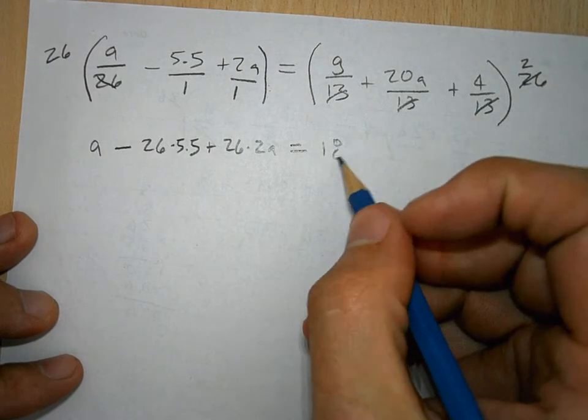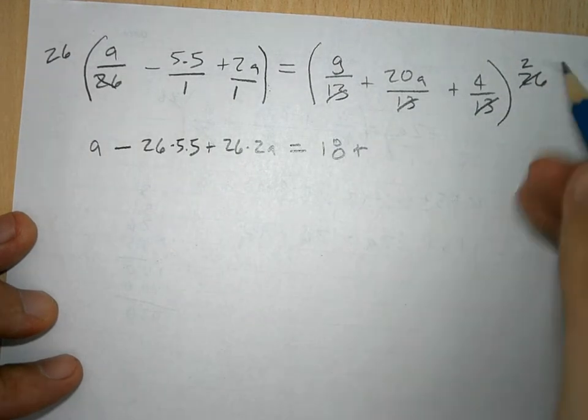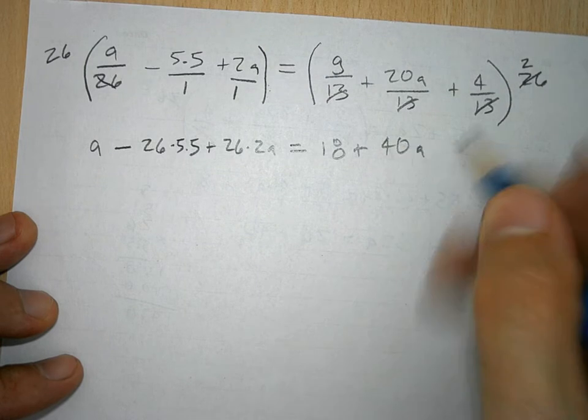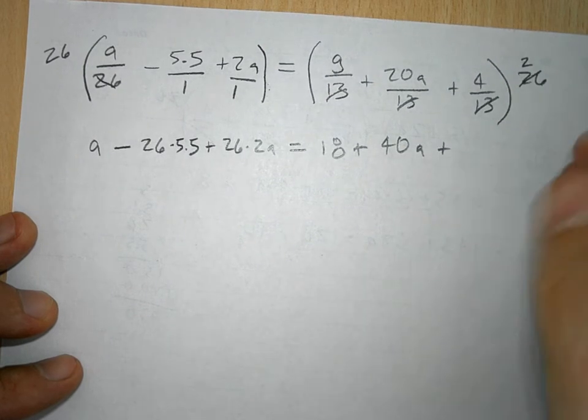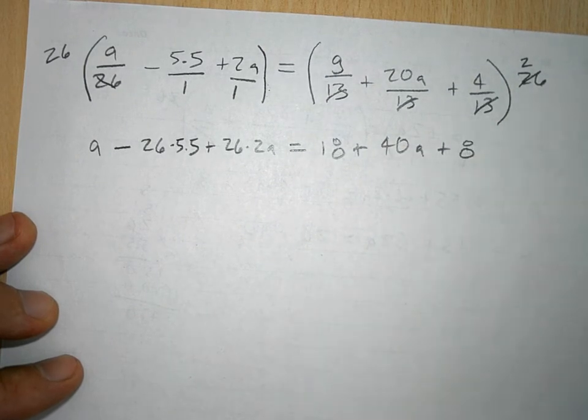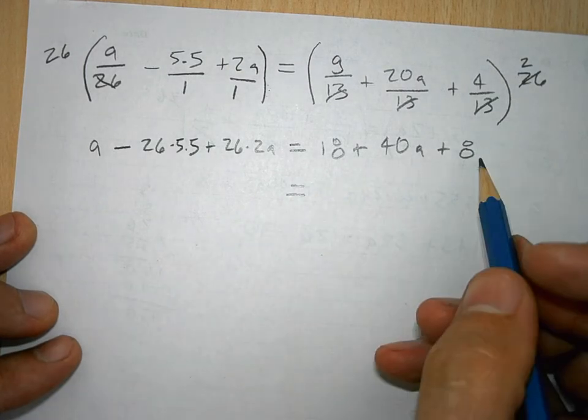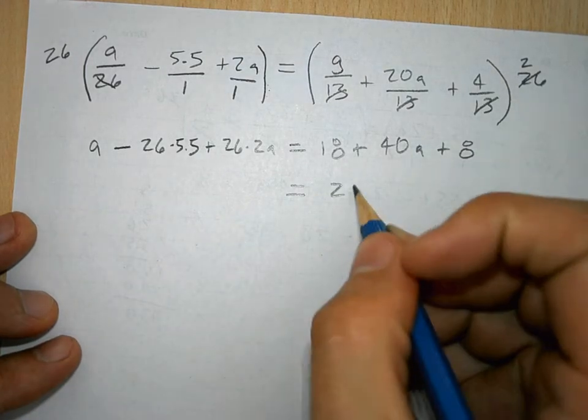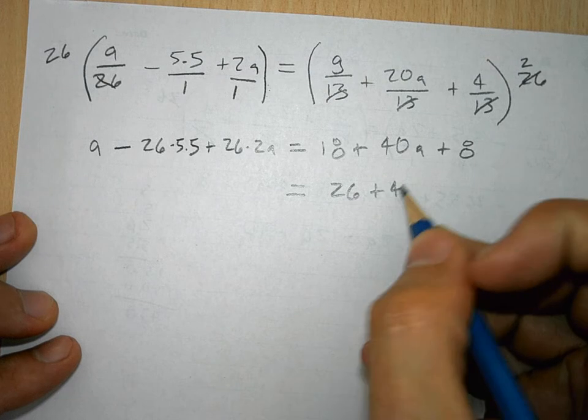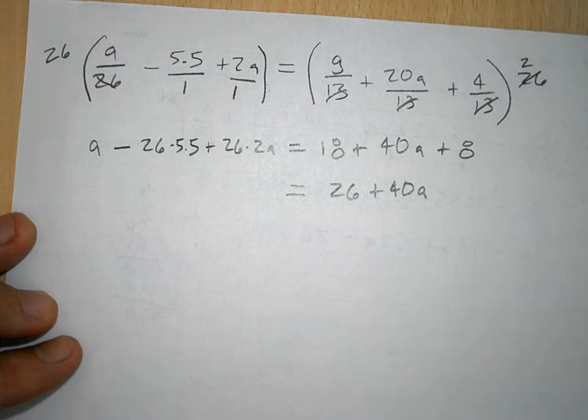So, 2 times 9, which is 18, and 20A times 2, which is 40A, and 2 times 4, which is 8 there. We combine like terms with the 8s, and the 18 are like terms. So, we have 26 and 40A here.